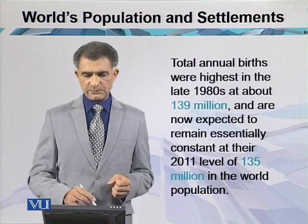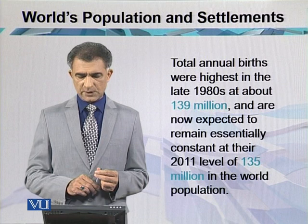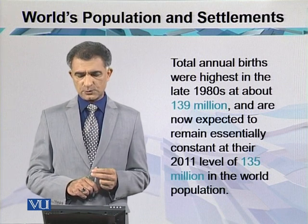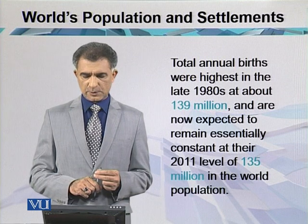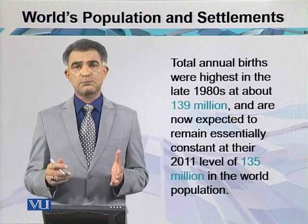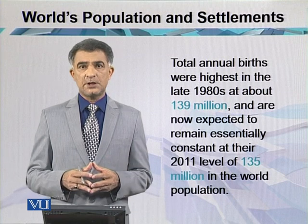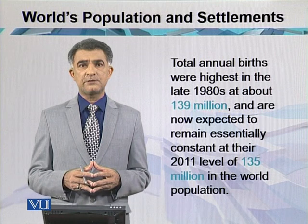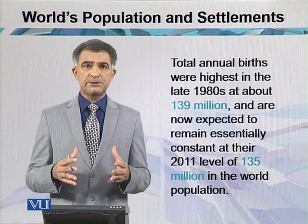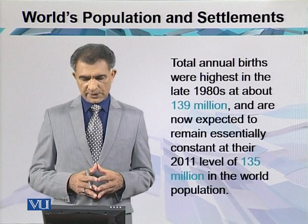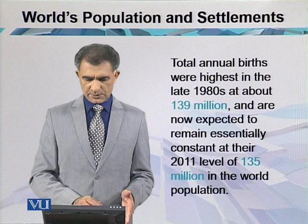The total annual births were highest in the late 1980s at about 139 million, and are now expected to remain essentially constant at their 2011 level of 135 million in world population. Most of these births belong to less developed and developing countries, but some are also related to developed nations.